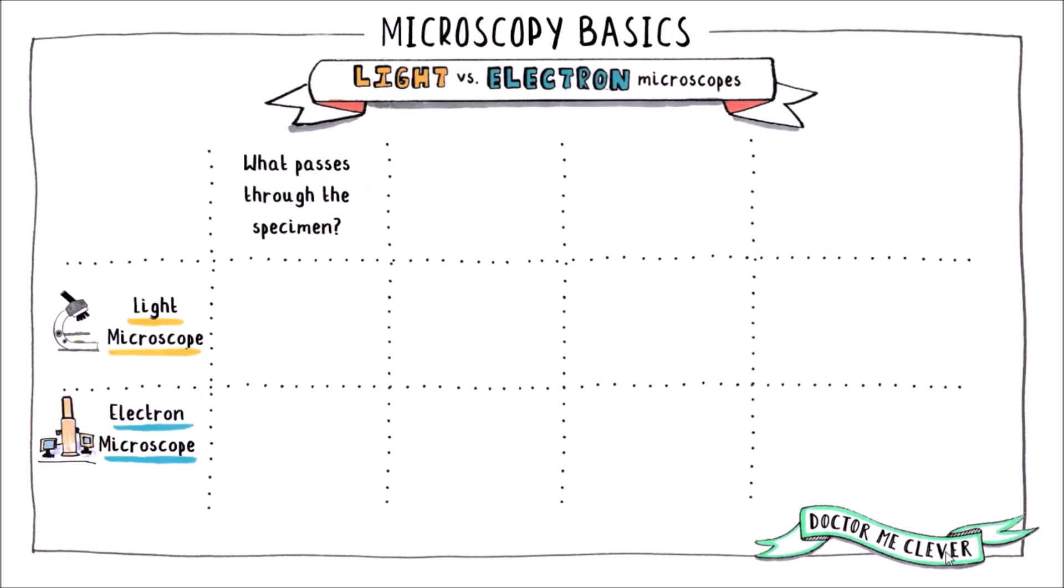To finish up let's just summarize the main differences between a light and an electron microscope. The light microscope passes light through a specimen whereas the electron microscope passes electrons through the specimen. The light microscope can be used to study living cells or organisms whereas the electron microscope requires that the cells or organisms are dead.